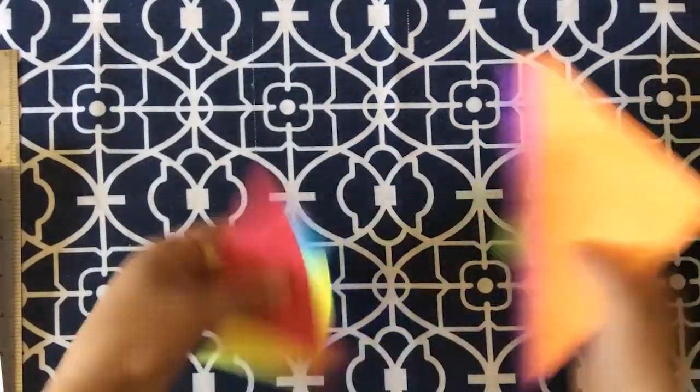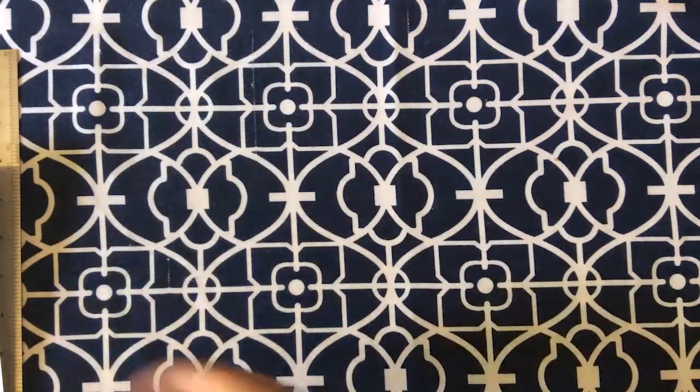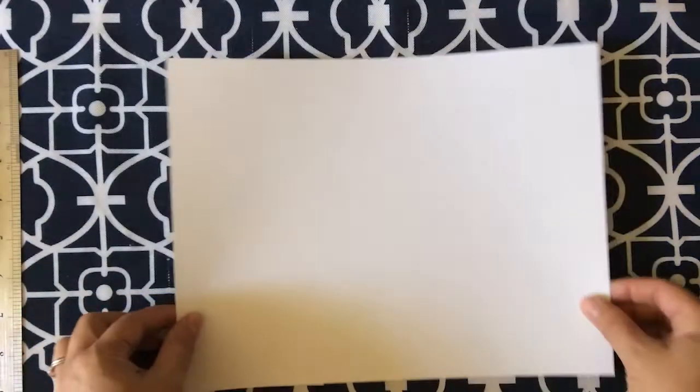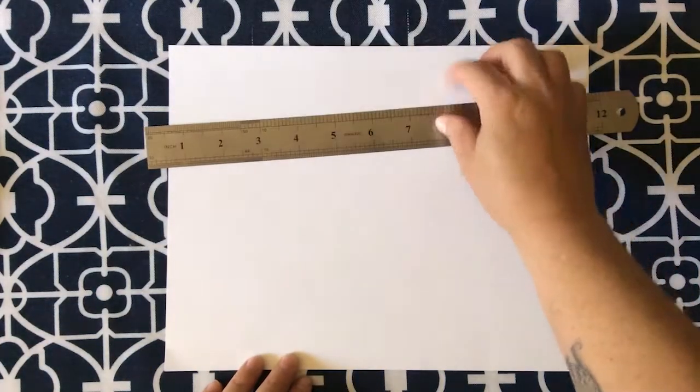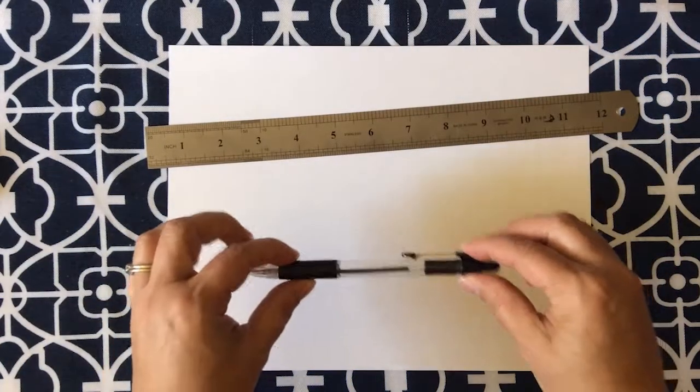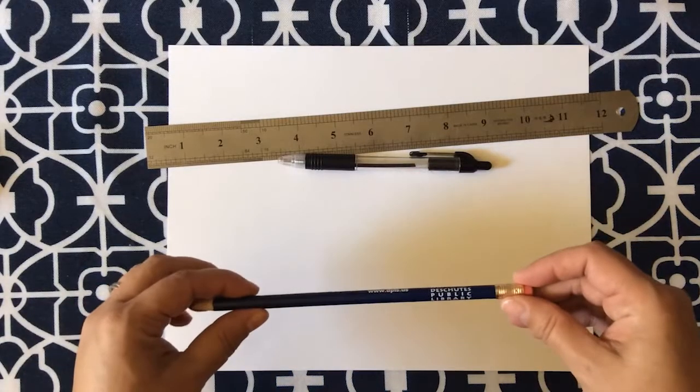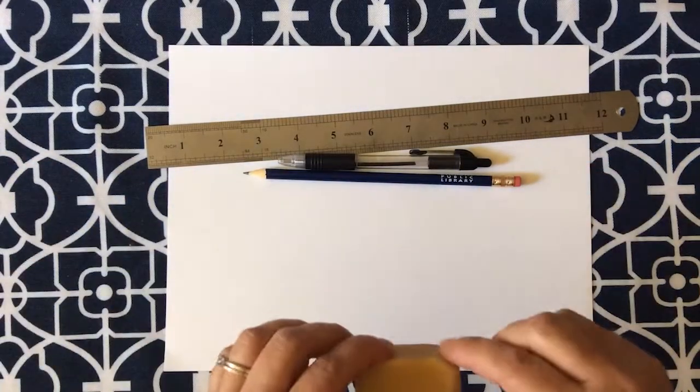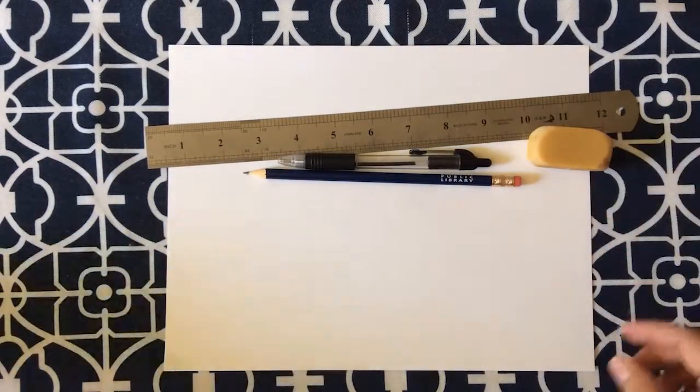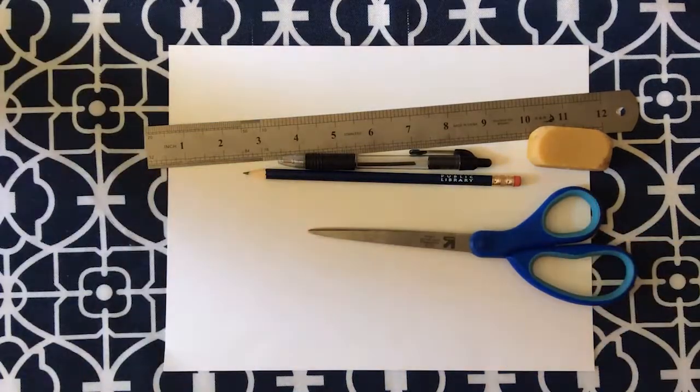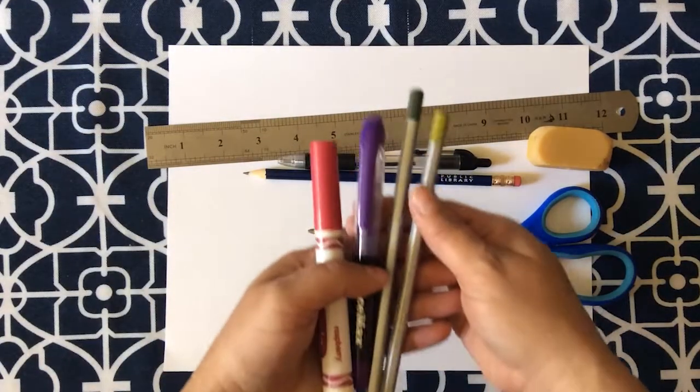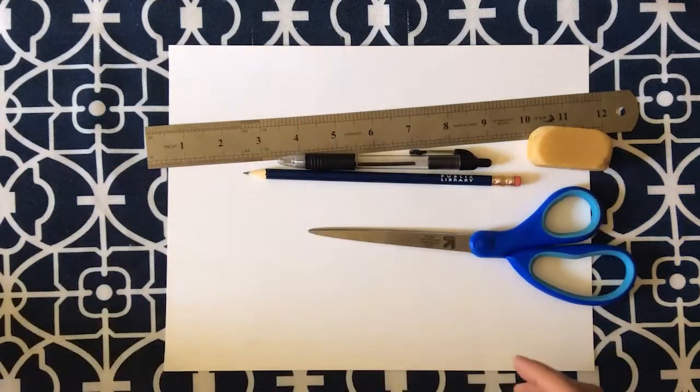Well, the supplies that you will need are a piece of paper or cardstock, a ruler, a pen, a pencil, an eraser, a pair of scissors, and then something to color the different pieces.